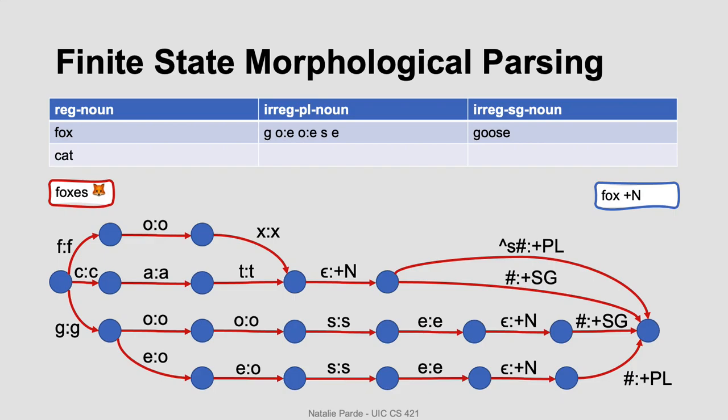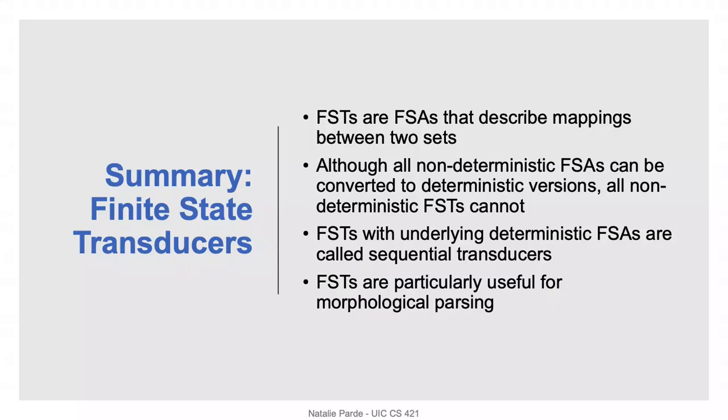To transition to the next state from here, we could have regular expressions checking for '-es' or just '-s' to indicate that a word is plural, or nothing to indicate that a word is singular. So we ultimately end up with the morphological parse that you see here.